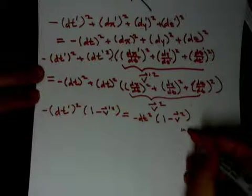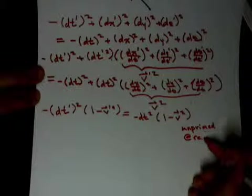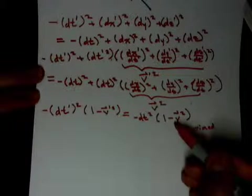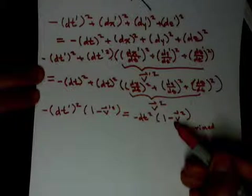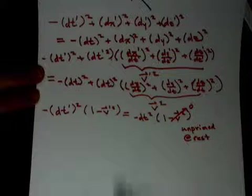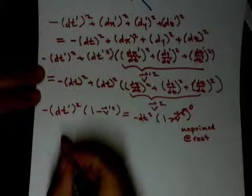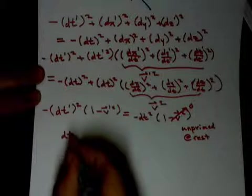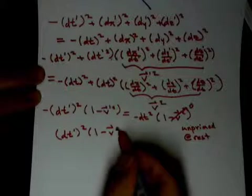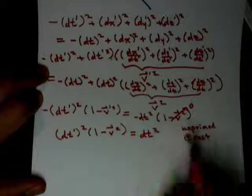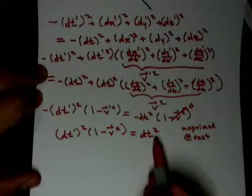This is our prime observer and our unprimed observer. And we'll call the unprimed observer will be at rest. So they're at rest in their frame of reference. So the velocity. So we'll say the coordinate system's at rest with them. So their velocity is going to be zero. So, and we've got a minus sign here and a minus sign here. So those are going to cancel. So we get.